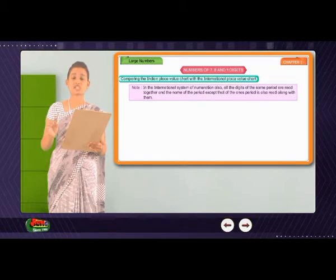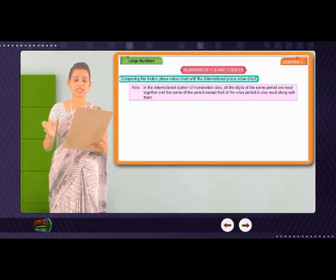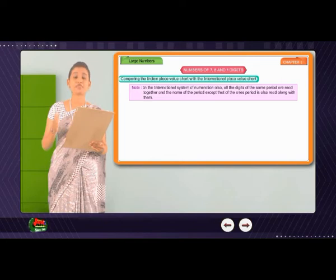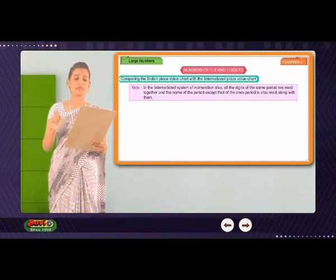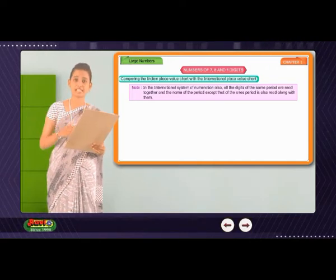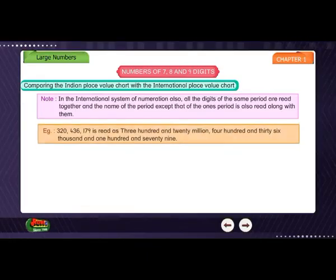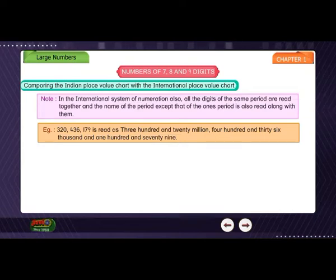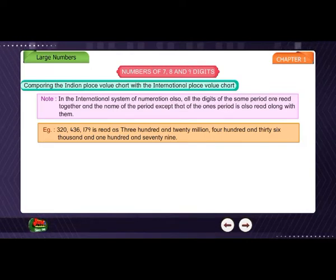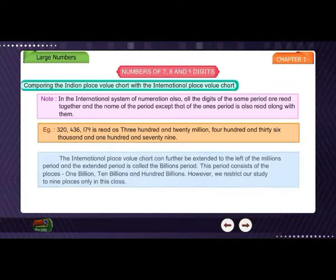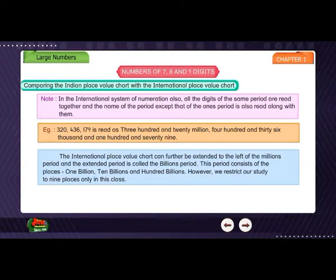Note: In the international system of numeration, all the digits of the same period are read together, and the name of the period — except that of the ones period — is also read along with them. Example: 320,436,179 is read as three hundred twenty million, four hundred thirty-six thousand, one hundred seventy-nine.